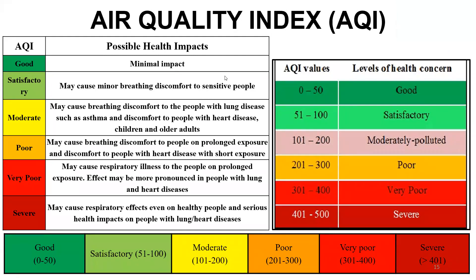Yes, we can classify air pollutants as primary and secondary pollutants. In that way we'll be able to classify them very nicely. Can you list out and tell me an example of a secondary pollutant?